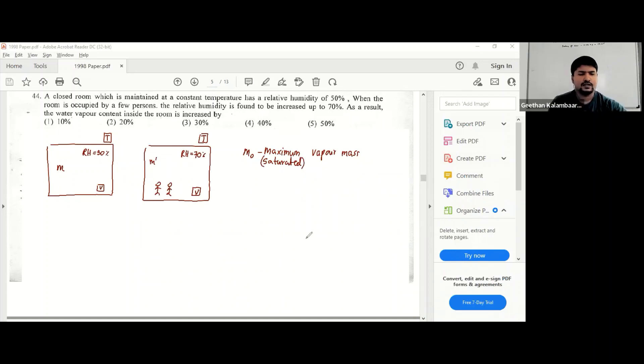In order to saturate, what are the factors saturated vapor mass depends on? There are two factors. One is the volume, the other one is the temperature. None of them are changing. So the saturated vapor mass for both scenarios is a constant, M₀ and M₀. It's a constant, it doesn't change.